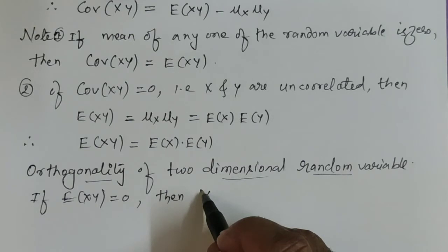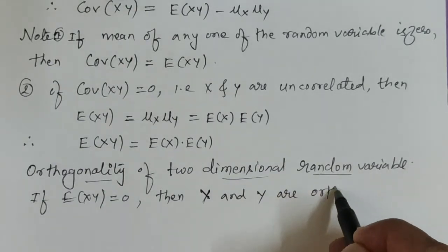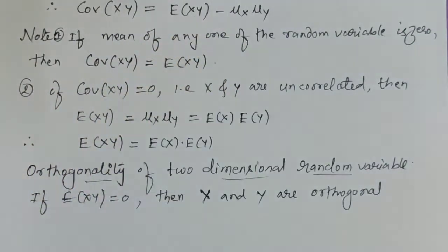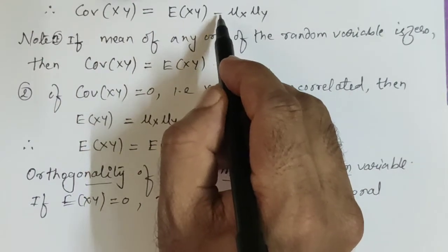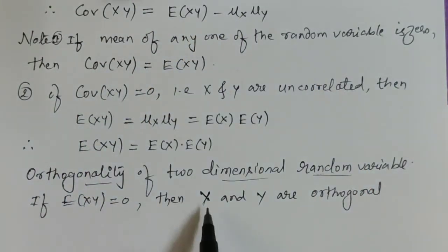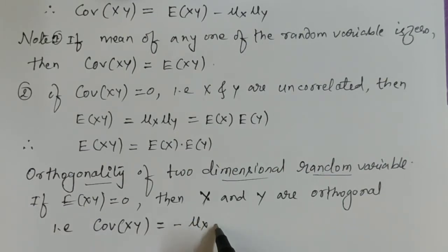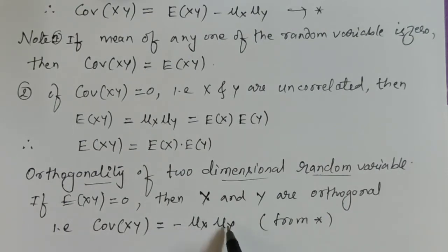X and Y are called orthogonal when E[XY] = 0. From the covariance formula, if E[XY] = 0, then Cov(X, Y) = −μ_x·μ_y. So if x and y are orthogonal, covariance equals minus the product of their means.